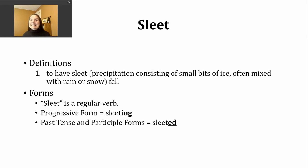You should know that sleet is a regular verb. To make the progressive form, all we're going to do is add -ing to form 'sleeting.' To form the past tense and participle forms of the verb, we just need to add -ed. Because the verb sleet ends with a t sound, our -ed is going to make an -id sound: sleeted.